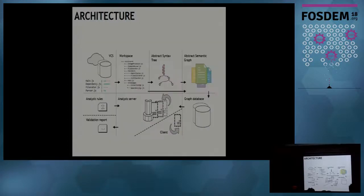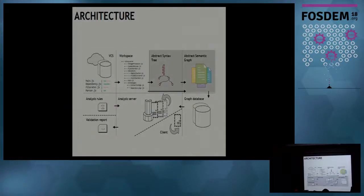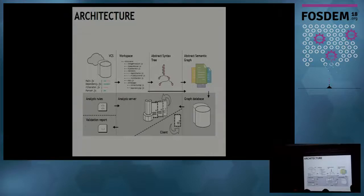This is the high-level architecture of our system. It starts with the version control system where all code is committed. It's then loaded to the workspace of the analyzer, transformed to a syntax tree and semantic graphs, loaded to the graph database. We get a set of analysis rules to check, and then perform continuous checks on the server, giving feedback to the client continuously.